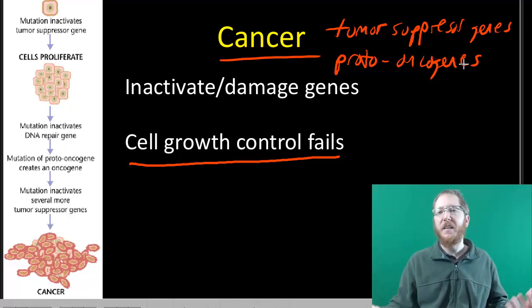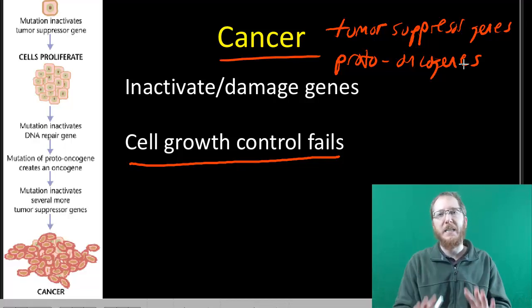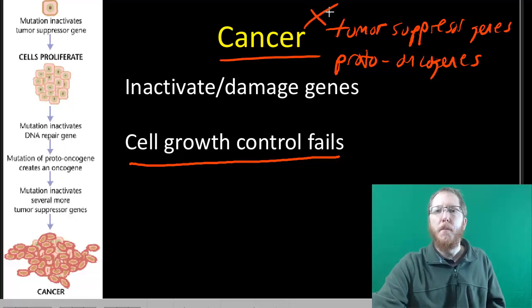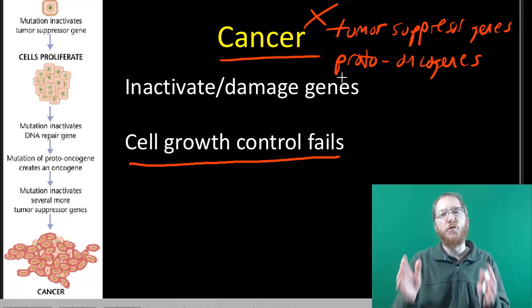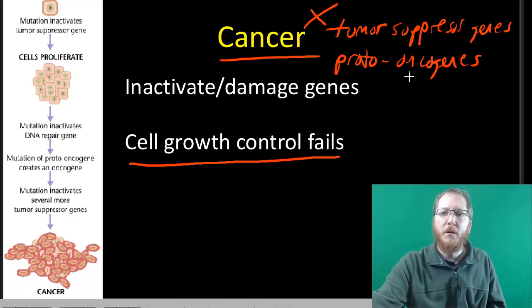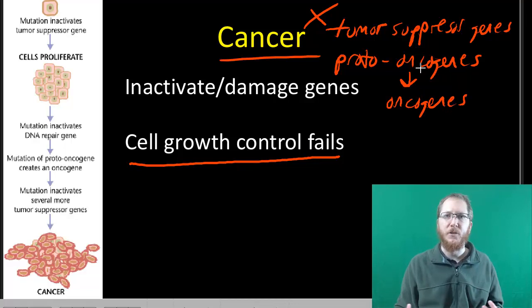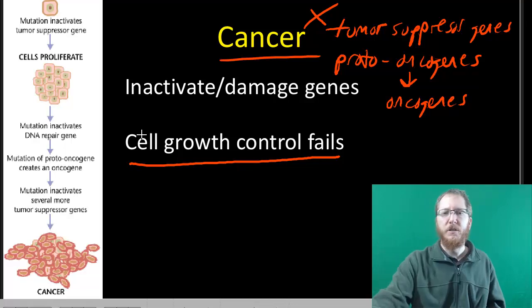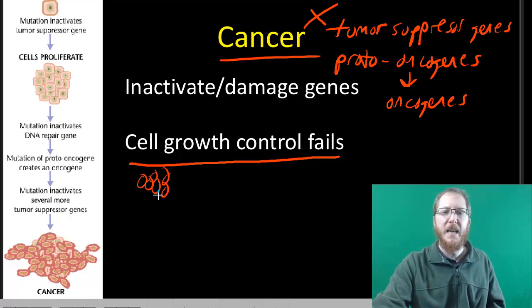Over time, these protective genes can be turned off, inactivated, or damaged. If all tumor suppressor genes are screwed up, they're no longer controlling cell reproduction. If proto-oncogenes mutate into oncogenes — cancer genes — they no longer prevent the cell from becoming cancerous. The result is a cancerous cell that just divides and divides, eating resources without doing any work, essentially leeching off your body.